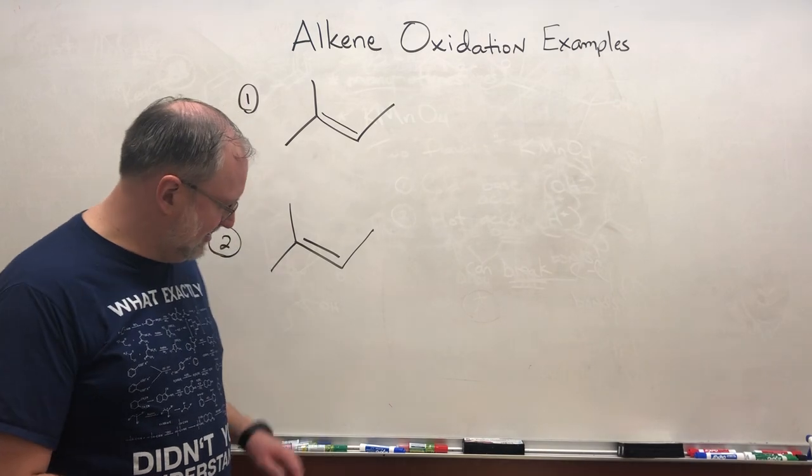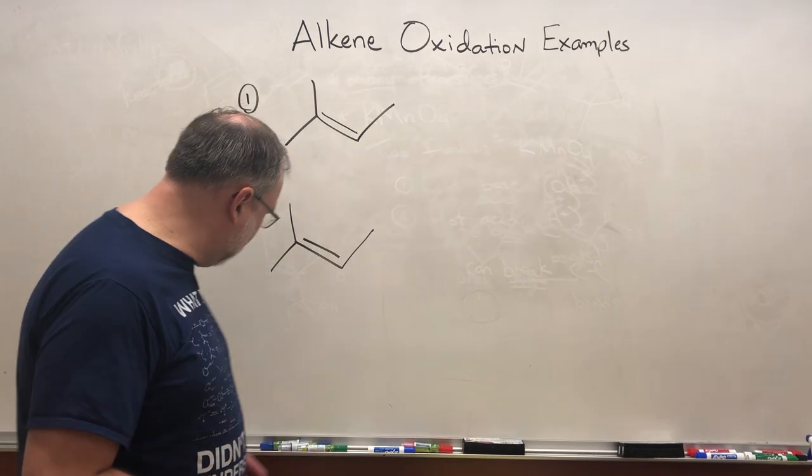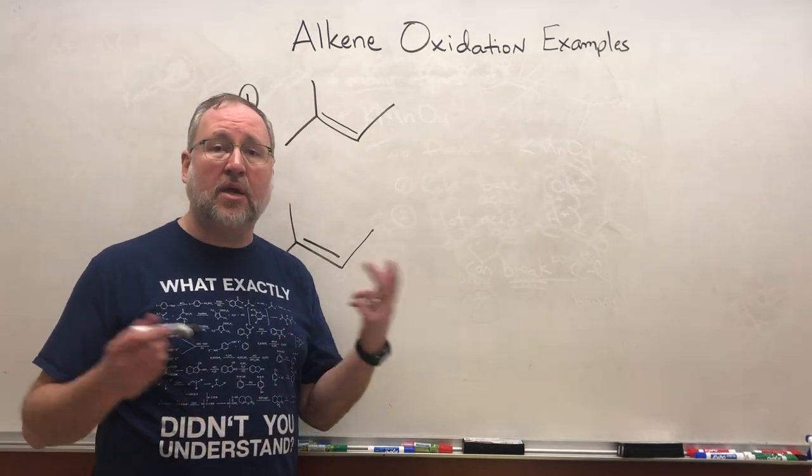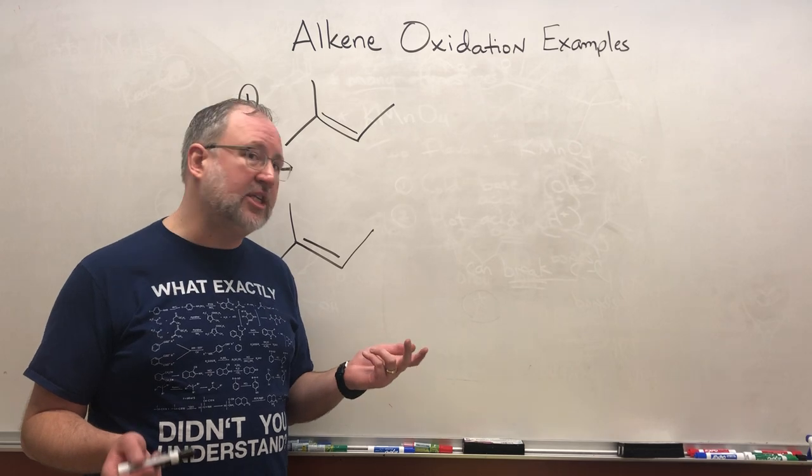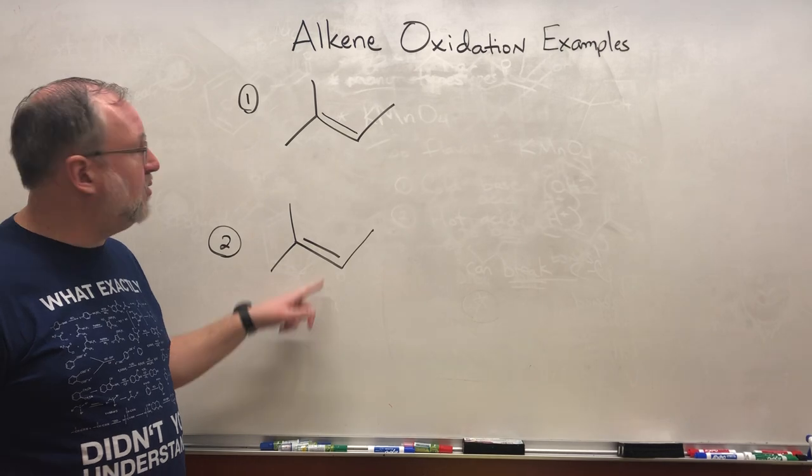Okay, I'm assuming that you have read this handout on alkene oxidation. Let's look at some examples. We know that there are two different flavors. Both of them involve the same oxidizing agent, potassium permanganate. I have the same alkene written up here twice.